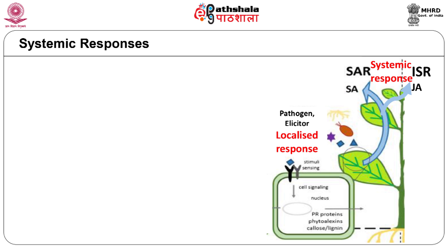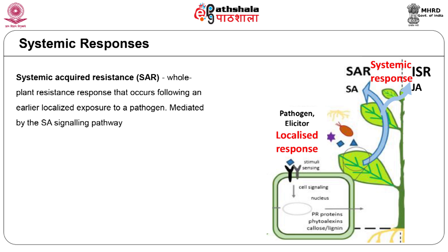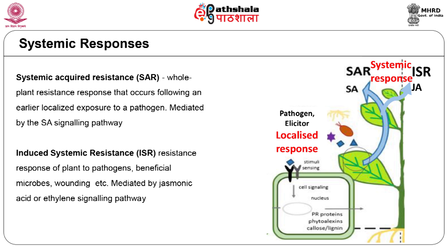Prevention of the spread of disease from the site of infection to the distal parts of the plant is mediated by two mechanisms, in which intercellular signals generated at the site of infection move systemically to other parts of the plant to induce resistance. In systemic acquired resistance (SAR), signal transduction is mediated by salicylic acid. The induced systemic resistance (ISR) signal involves jasmonic acid and ethylene. ISR signaling occurs in response to necrotrophic pathogens, beneficial microorganisms and even wounding, while resistance to biotrophic pathogens is mediated by the SAR pathway. There is evidence of crosstalk between these two systemic signaling pathways via a signaling intermediate NPR1.